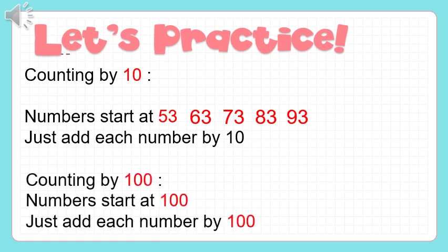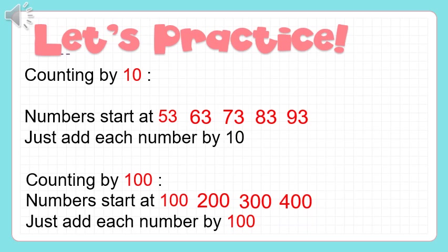Counting by a hundred — this is a relationship in number patterns going up or counting up using hundreds. For example, counting by a hundred, starting at one hundred: one hundred plus one hundred is two hundred, two hundred plus one hundred is three hundred, three hundred plus one hundred is four hundred. So the number pattern counting by a hundred is: one hundred, two hundred, three hundred, and four hundred.